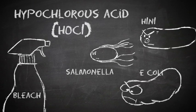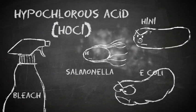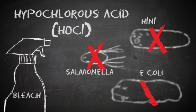Bleach unleashes a form of chlorine that is a major problem for germs like E. coli, salmonella, and flu viruses.